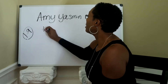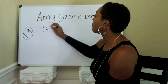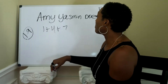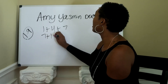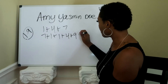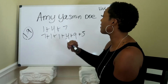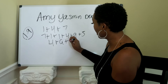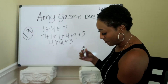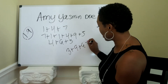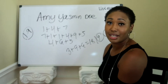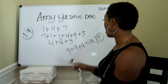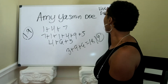Let's go ahead and do that. A is one, M is the 13th letter of the alphabet so M equals four, and Y is the 25th letter so two plus five is seven. Then the middle name Yasmin: Y is seven, A is one, S is one, M is four, I is nine, and N is five. Then her last name Doe: D is four, O is six, and E is five. When you add up all of these numbers, you come up with 18, which reduces to nine. So Ms. Doe's destiny number is a nine.